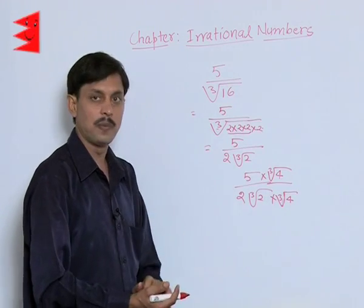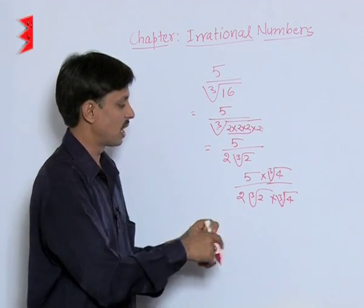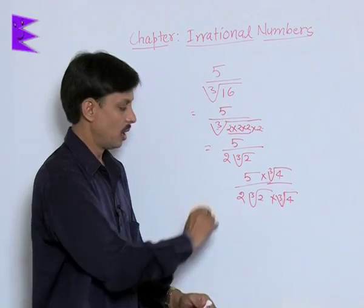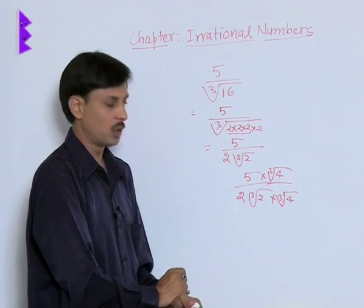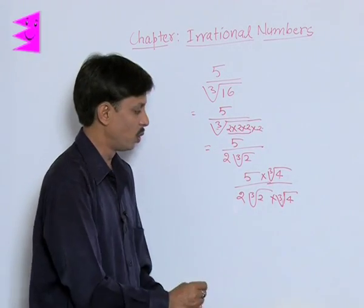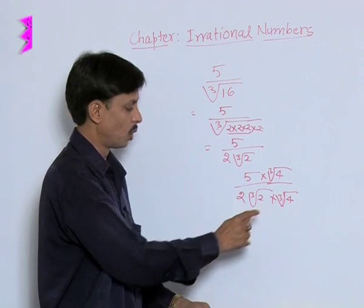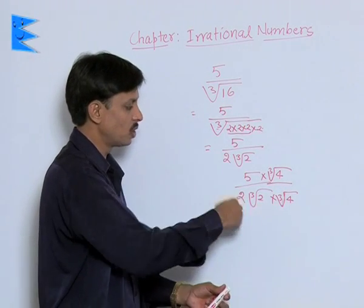Now, question is why cube root of 4? The reason is because I have cube root of 2. There is one prime number 2. I need two more 2s under the same order. Two more 2s means two 2s of 4.